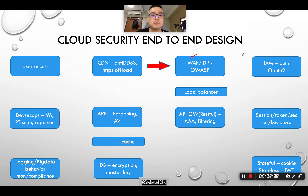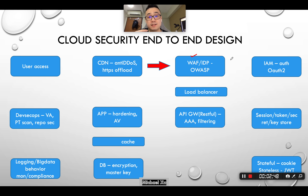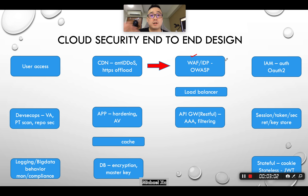The request then moves to the next layer: the WAF layer or the IDP layer. The WAF is the web application firewall, provided by cloud providers. The IDP is the Intrusion Protection System. Basically, it protects you against attacks listed in the OWASP Top 10, for example SQL injection and cross-site scripting. The IDS/IPS does signature-based protection.